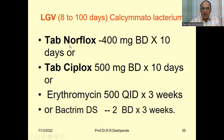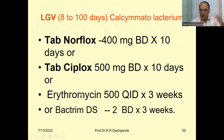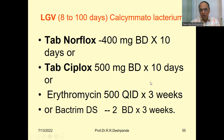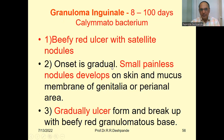What should be the treatment? Tablet Norfloxacin 400 mg BD for 10 days. Tablet Ciprofloxacin 500 mg BD for 10 days. Then erythromycin, the traditional drug, 500 mg QID for 3 weeks. Then Bactrim-DS, two tablets two times a day for three weeks. The duration is longer for these traditional medicines.